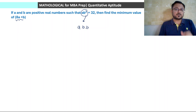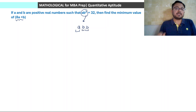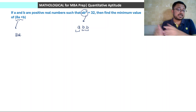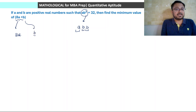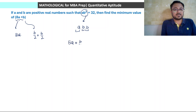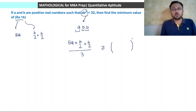Since the product has b appearing twice, we split b into two parts: b by 2 plus b by 2. Applying AM-GM: 8a plus b by 2 plus b by 2, all divided by 3, is greater than or equal to cube root of 8a into b by 2 into b by 2. This becomes a·b² into 8 by 4, so the product becomes 2·a·b².